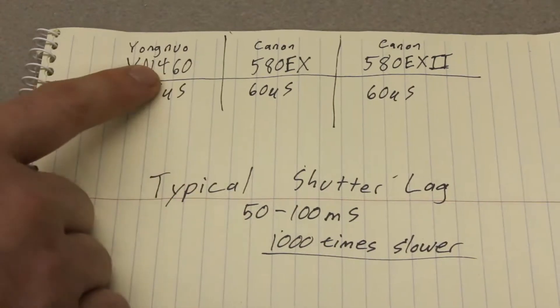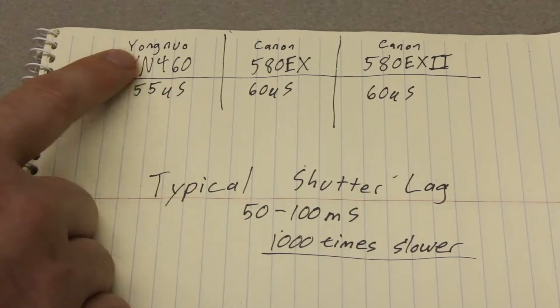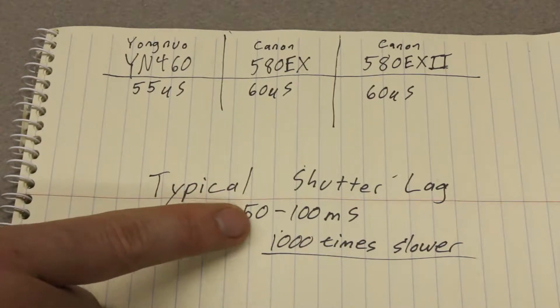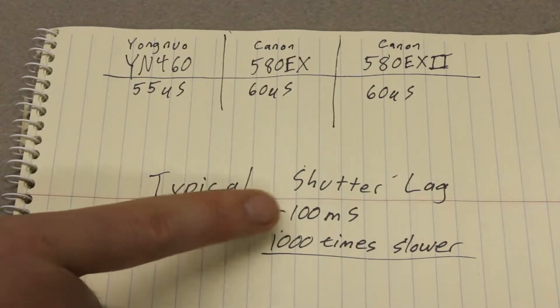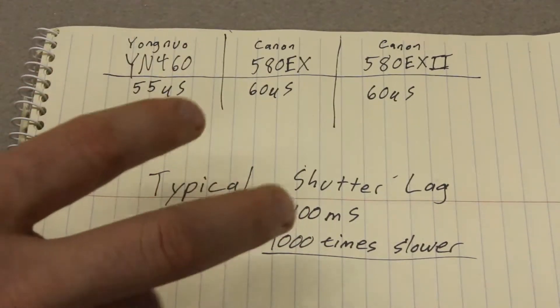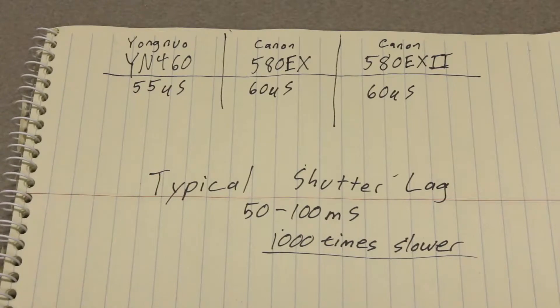And I wanted to compare these flash lags to shutter lag. Shutter lags are typically 50 to 100 milliseconds. So that's a millisecond versus a microsecond, meaning that we're talking about a thousand times slower for your typical shutter lag. Thanks for watching.